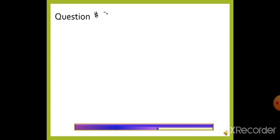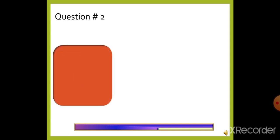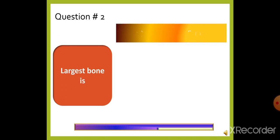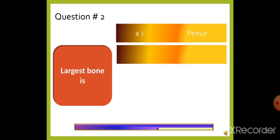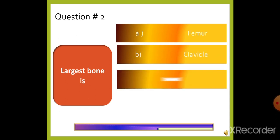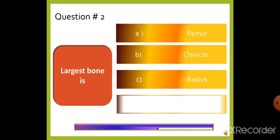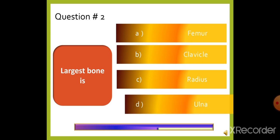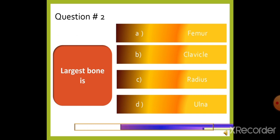Question 2: The largest bone is — option A: Femur, option B: Clavicle, option C: Radius, or option D: All of the above. The right answer is option A, Femur.